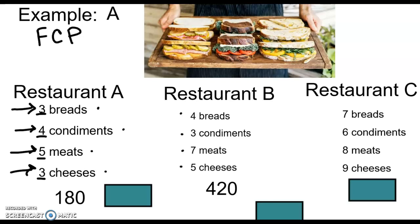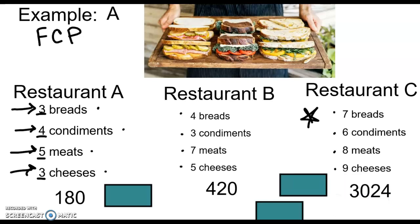Restaurant C — you do this one. Type it into your calculator. The answer is seven times six times eight times nine, which equals 3,024 different sandwich combinations. So I can calculate that without having to list them, do a tree diagram, or a table. If I just want how many different combinations, I use the fundamental counting principle.